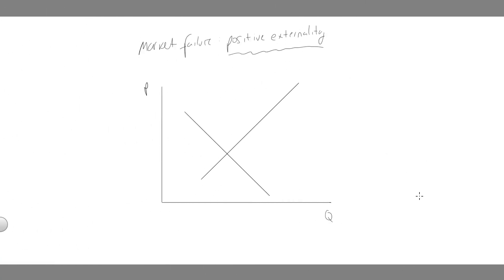Okay, let's flip up the situation. Here we've got market failure and a positive externality. So let's start by labeling our curve. So here I've got supply.